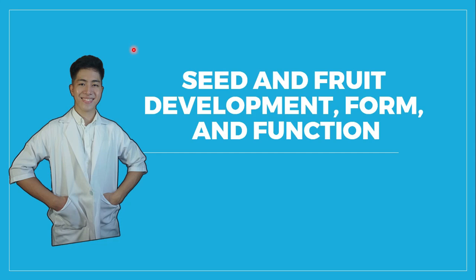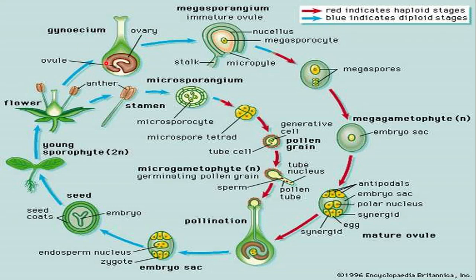But before we discuss this lesson, let's have a review on our previous lesson about the development of male and female gametophyte. It is very important that we clearly understand the previous lesson because this is connected to our lesson for today. We will start on what we call megasporogenesis, which occurs in the ovule inside the ovary of the pistil. Again, the pistil is the female reproductive organ, and the final product is what we call the embryo sac.